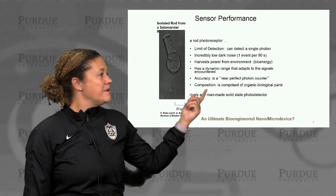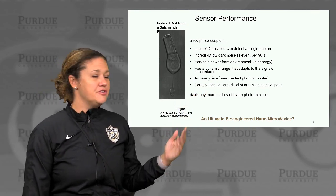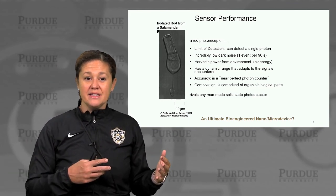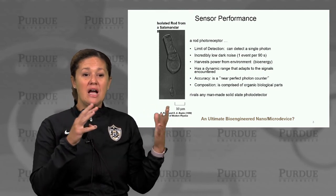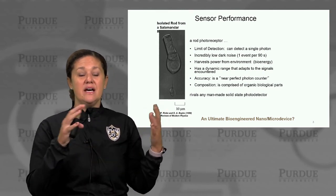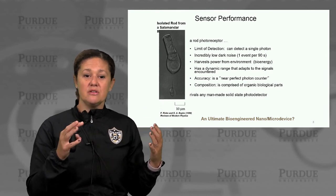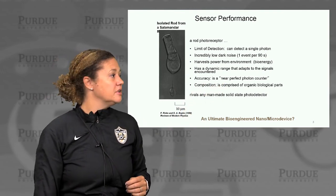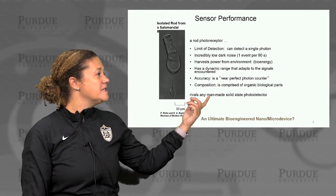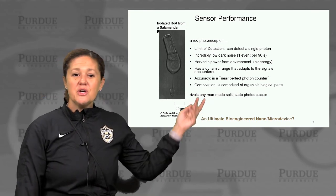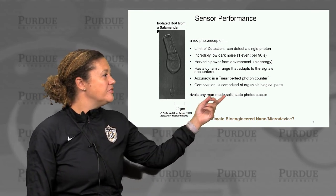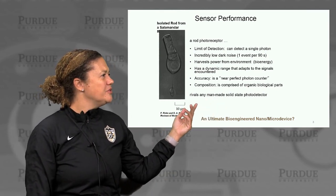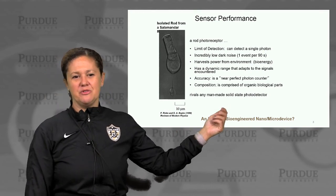It has a dynamic range that adapts to the signals it encounters. You know this intuitively — if you walk into a dark room and then walk out into sunlight, you have that time for your eyes to adjust. That's your retina and the photoreceptors at the cellular level adjusting their dynamic range. Its accuracy makes it a near perfect photon counter, and it's comprised of organic biological parts. I would argue that our photoreceptors rival our man-made solid state photodetectors — is a photoreceptor an ultimate bioengineered microdevice?